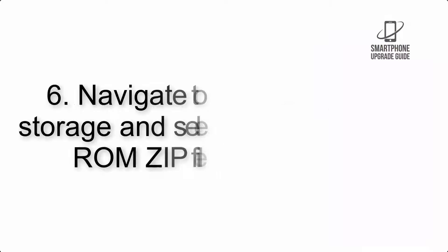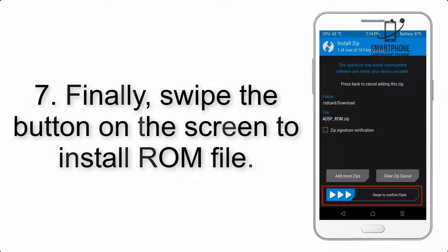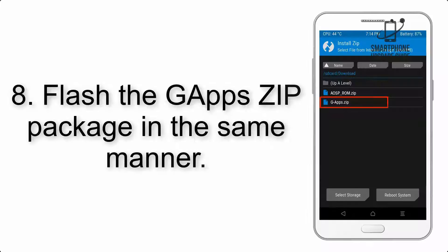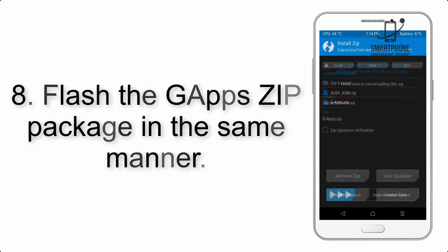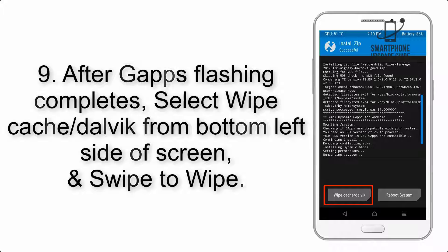Step 5: Go back to the recovery main screen and tap on the Install button. Step 6: Navigate to the storage and select the ROM zip file. Step 7: Swipe the button on the screen to install the ROM file.